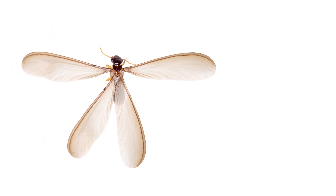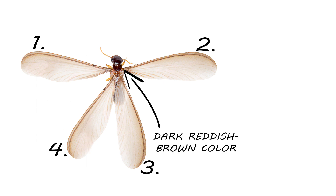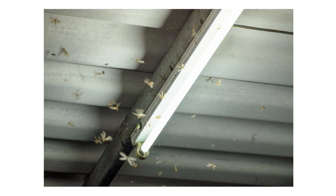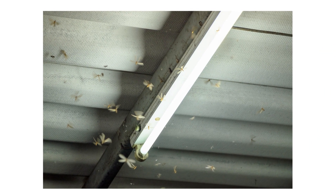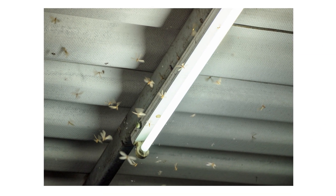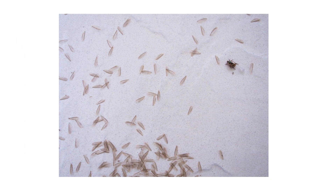And then there are alates, also known as swarmers. They're about half an inch in length, dark reddish brown in color, and have four wings of the same length. These matching wings are the best way to distinguish alates from flying ants. The alates are responsible for creating new colonies, so if you see these it can be a good sign you have an infestation. You can also look for their discarded wings around your home or structure.